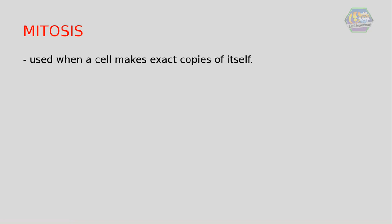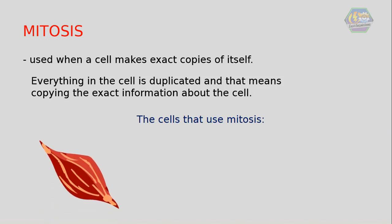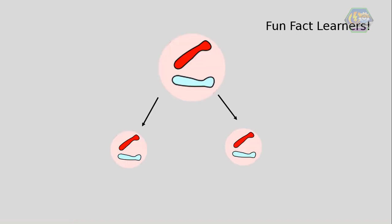What is mitosis? Mitosis is used when a cell makes exact copies of itself. Everything in the cell is duplicated — that means copying the exact information about the cell. The cells that use mitosis are the muscle, blood, and skin cells. Fun fact: did you know that the original cell is called the mother cell and the two new cells are called daughter cells?